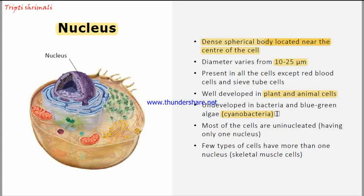If we talk about the number of nuclei present in a cell, in most cells the nucleus is present singly — this is called the uninucleated condition, meaning having only one nucleus. But in a few types of cells, there are more than one nucleus present, like skeletal muscle cells. That type of condition is called the syncytial condition, which means the presence of more than one nucleus. Nucleus is the singular term and nuclei represents the plural term.